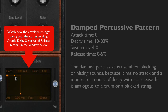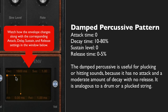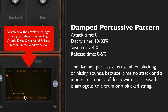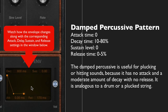The next pattern is the damped percussive pattern. It uses no attack time and no release time, just like the switch pattern, but unlike the switch pattern it does use a little decay time, and it brings the sustain level all the way down. As you can hear in those long notes, the note decays rapidly. You can also add a little bit of release time to a percussive to allow those keys to ring out a little bit after they're released, and it's still considered a damped percussive.